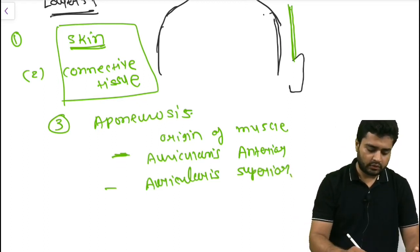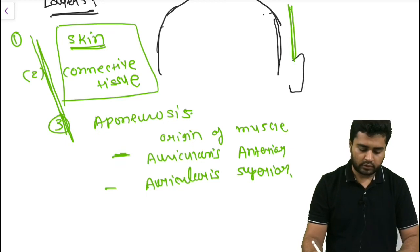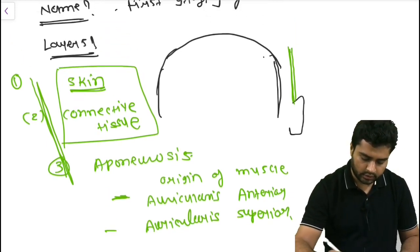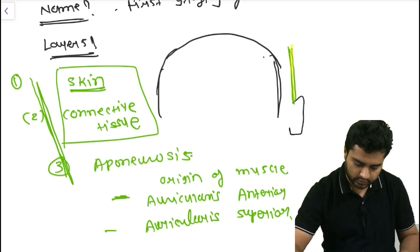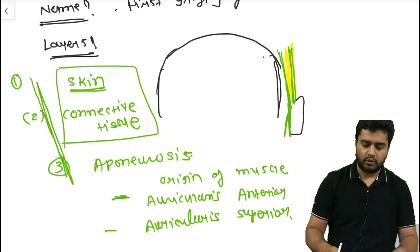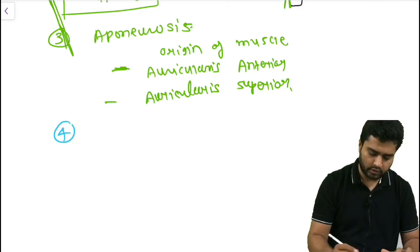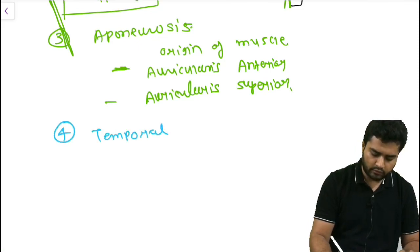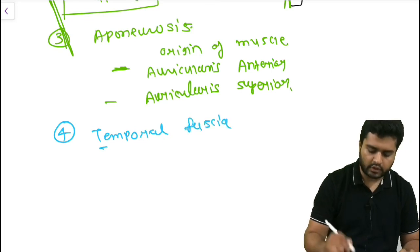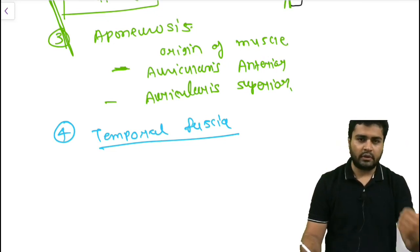These three layers are also tightly connected in this region. The difference is in the fourth layer. The fourth layer is known as the temporal fascia, which is different from the scalp. This temporal fascia is superiorly attached to the superficial temporal line and inferiorly up to the zygomatic arch.